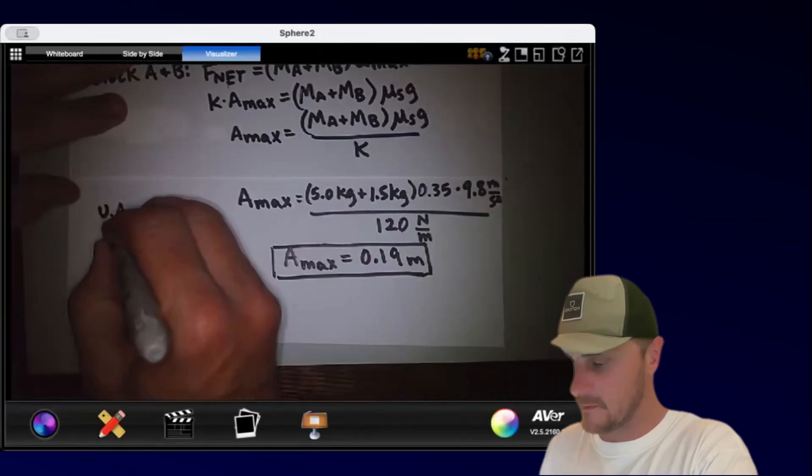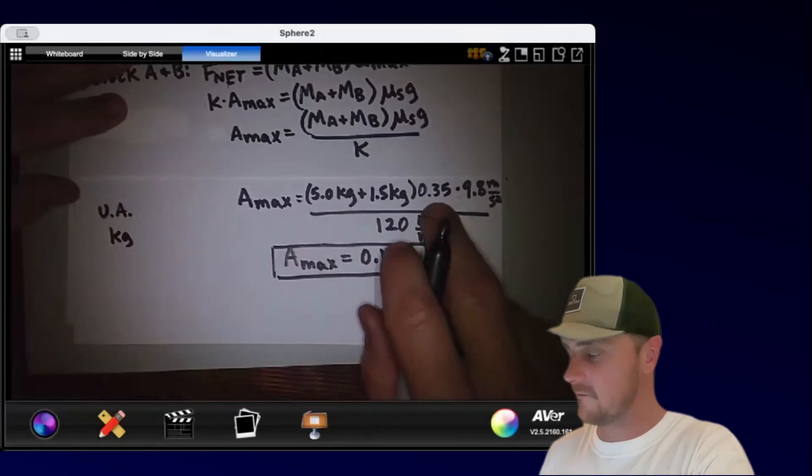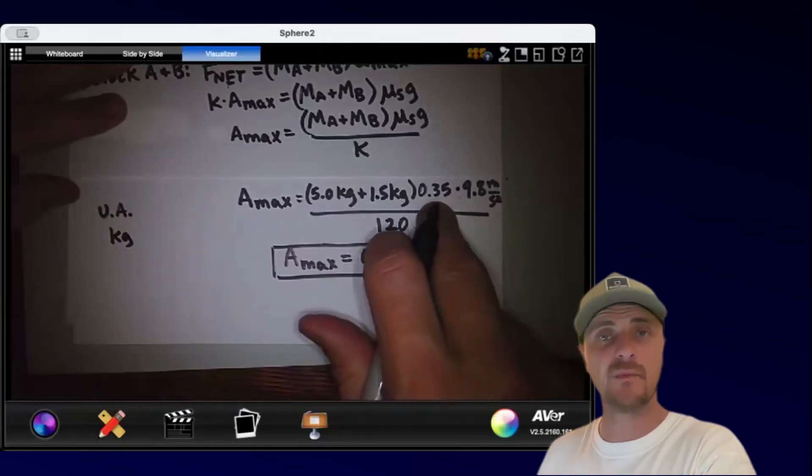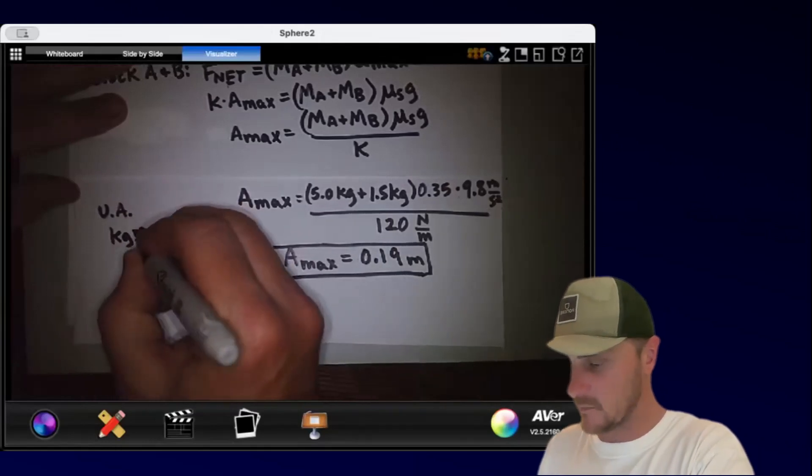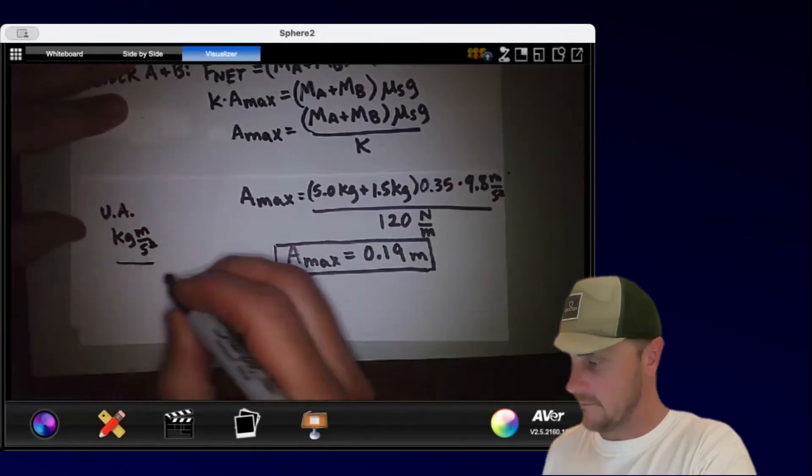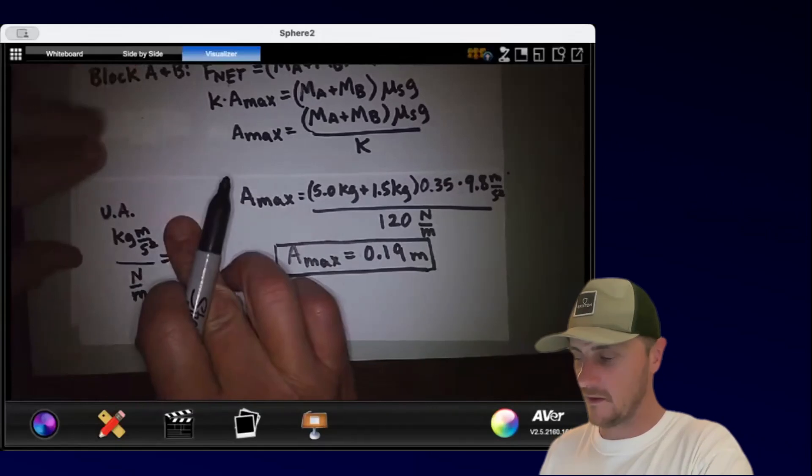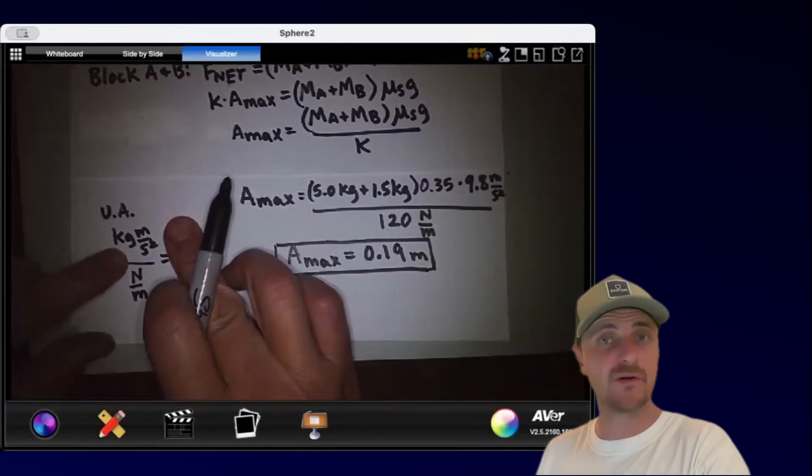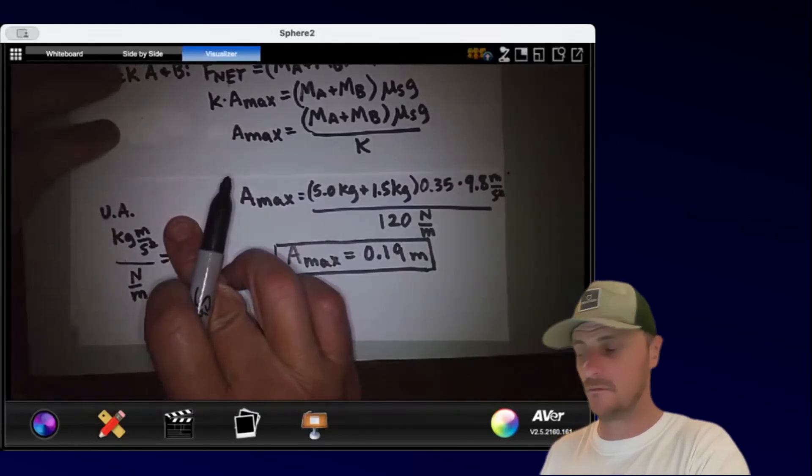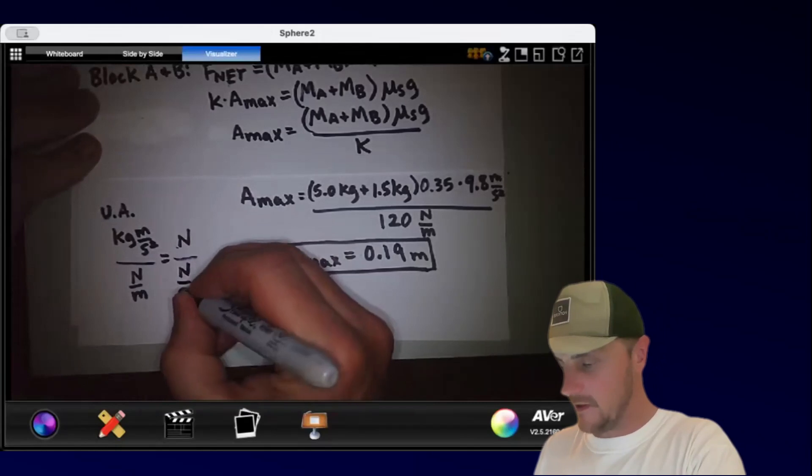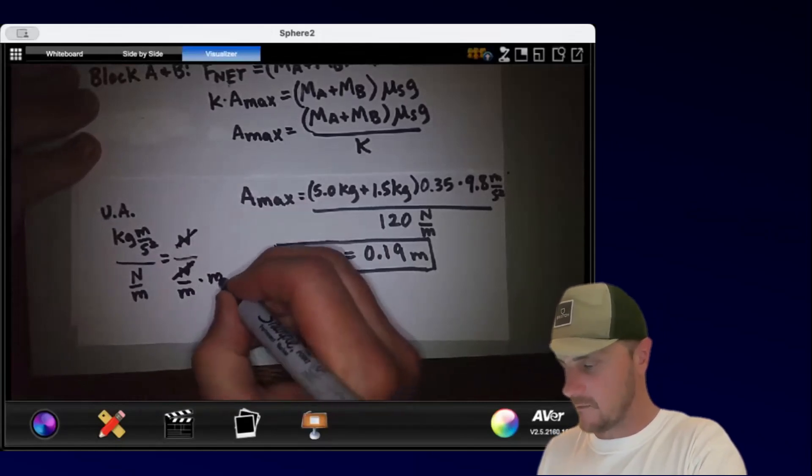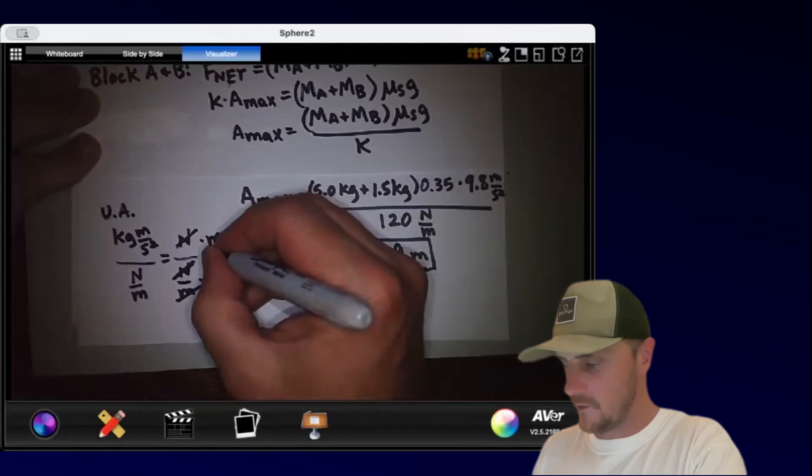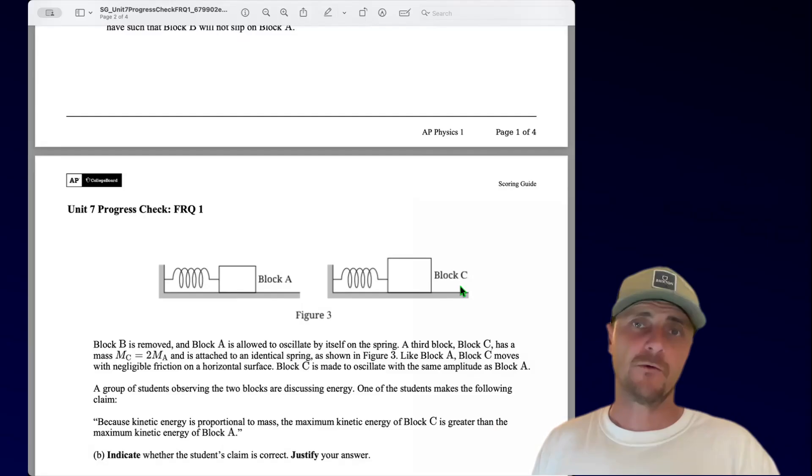But here comes the unit analysis. So kilograms plus kilograms is just kilograms. And I would have no unit for the coefficient of friction because that's just a ratio of forces. And then I have meters per second squared. I'm going to divide that by a newton per meter. I'll remind you that a kilogram meter per second squared is a newton over newtons per meter. The newtons would cross out and you could multiply top and bottom by m to get your unit of meter.